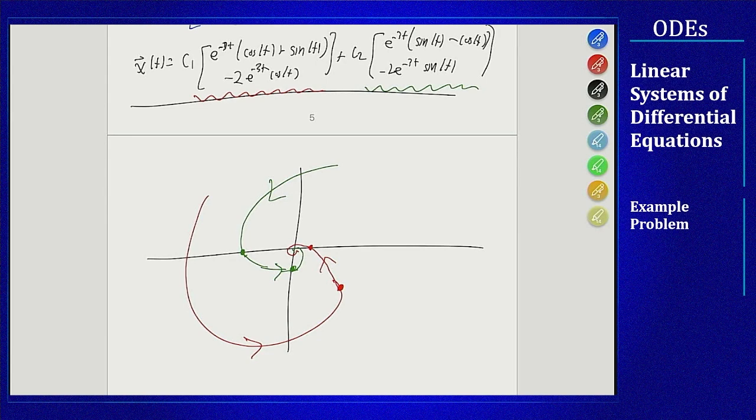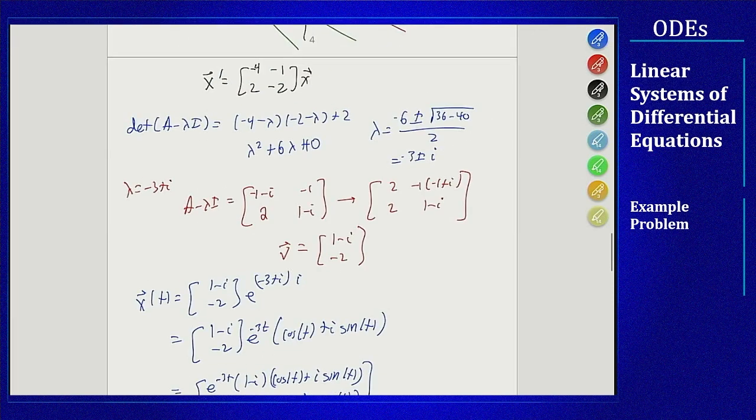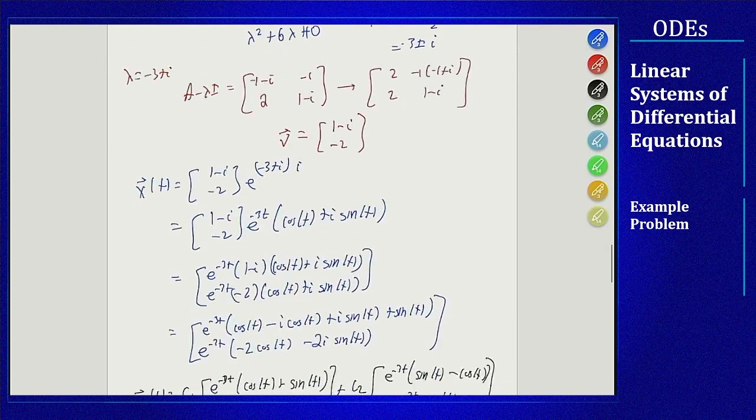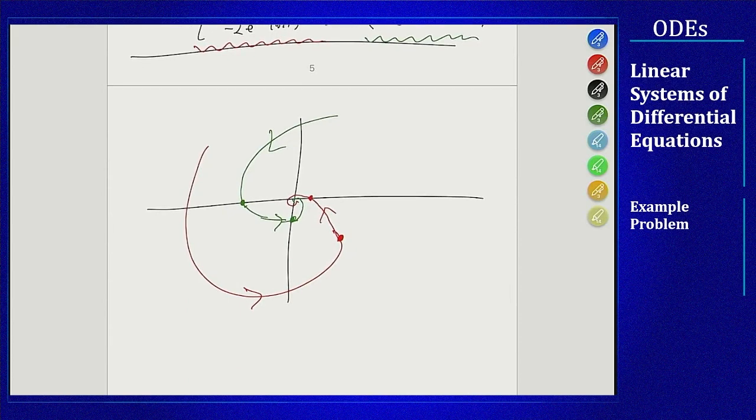We get a spiral sink that looks like this where things are spiraling in in a counterclockwise direction. Could we tell that from the matrix? Yes we could. Let's go back to the matrix again. We can focus again on the bottom left term. Because that term is positive, we can see a positive rotation or a counterclockwise rotation here, which in fact is what we see. It's a spiral sink spiraling to the center in a counterclockwise direction.